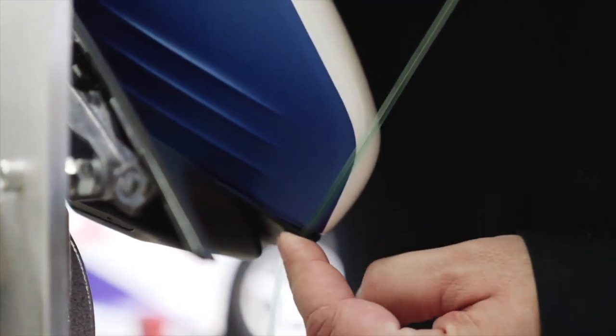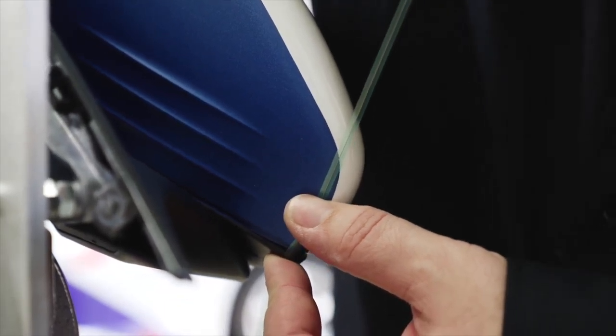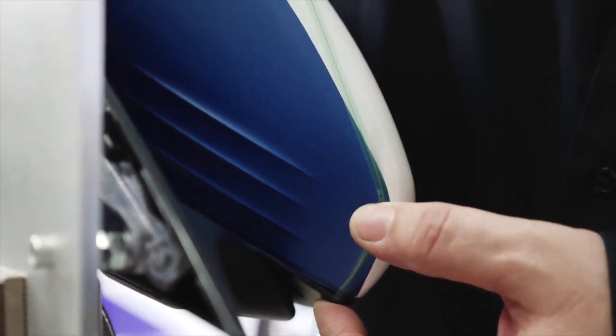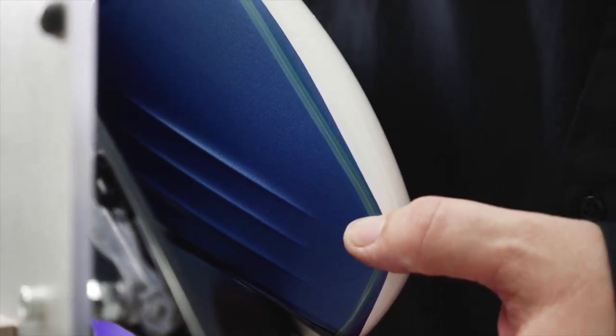Once again, using knifeless tape design line, apply the tape approximately 1mm from the edge of the film. Press the knifeless tape onto the film.